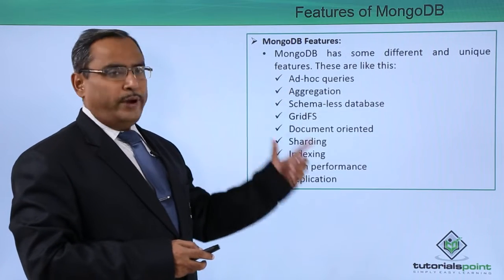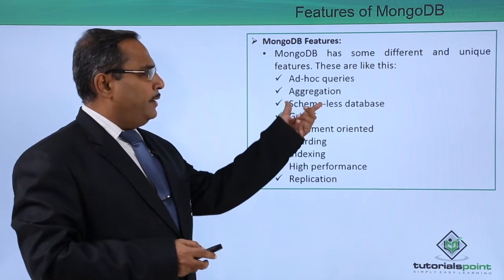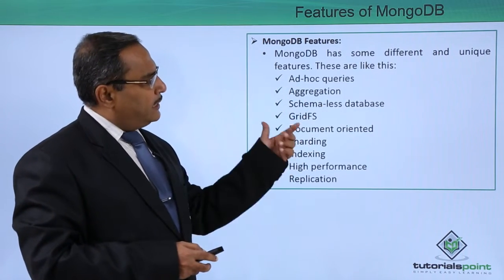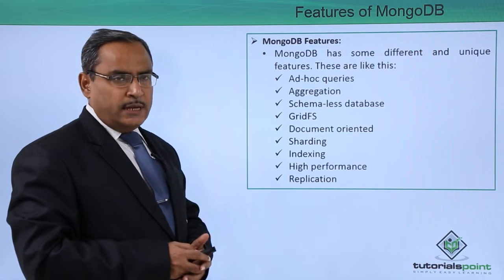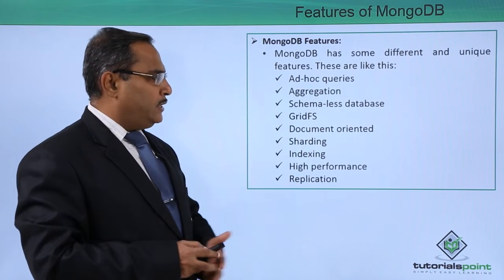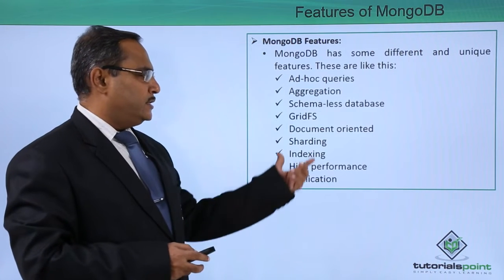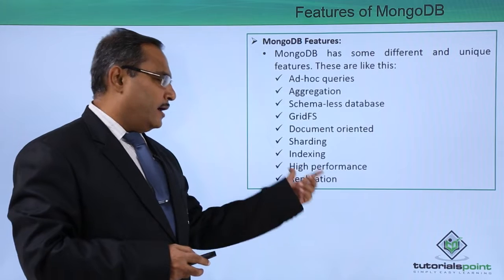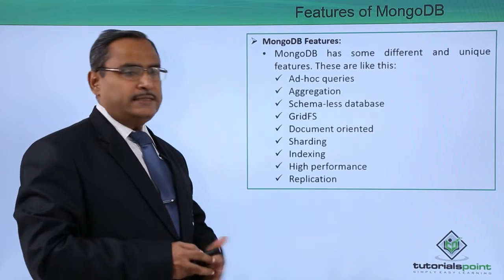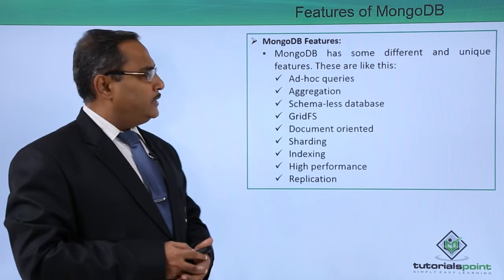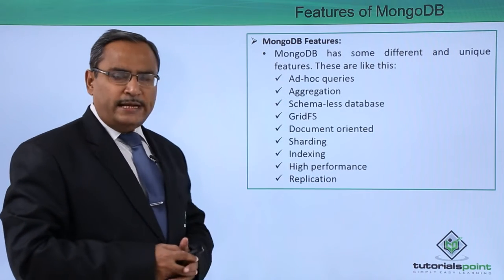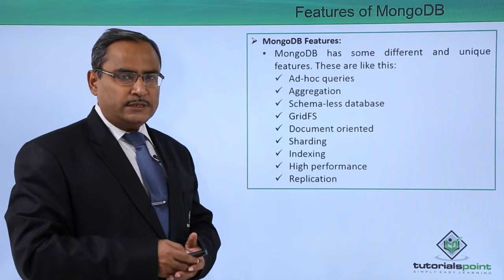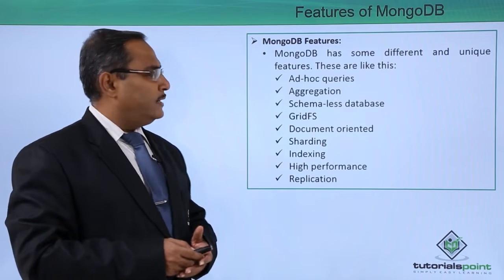The nine features are: ad hoc queries, aggregation, schema-less database, GridFS, document-oriented, sharding, indexing, high performance, and replication. We will be discussing each one after another.